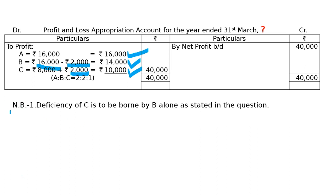Noted below 1 — मैंने इसके लिए NB1 कर दिया. Deficiency of C is to be borne by B alone, as stated in the question. इसलिए मैंने B से माइनस करा, C को दिया. इसी का journal entry लिखें तो it will be: B's Capital Account debited to C's Capital Account 2,000.